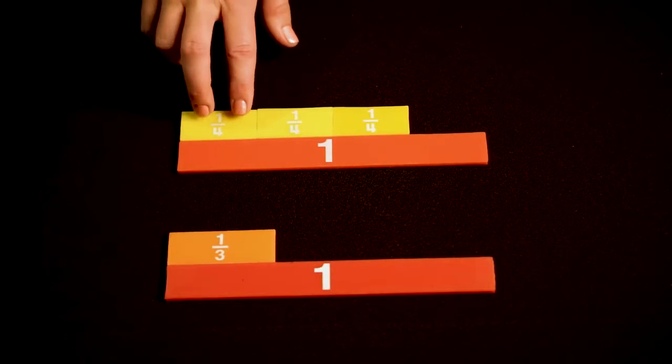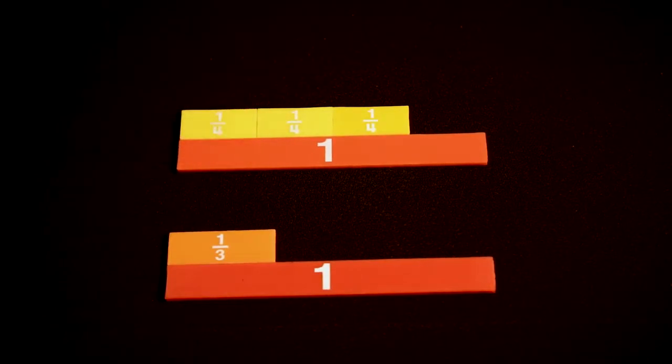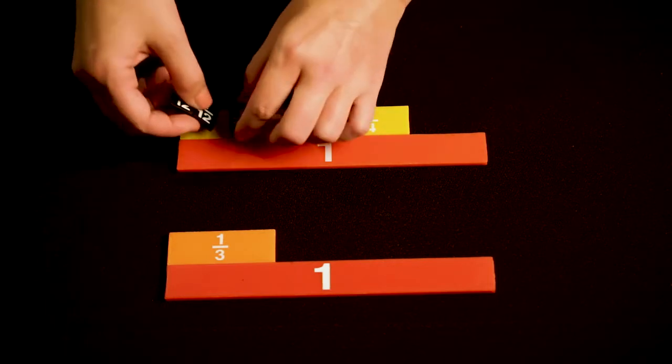If I take each of these 1 fourth pieces, and I want to get it to where it has a denominator of 12, 4 times 3 is 12.